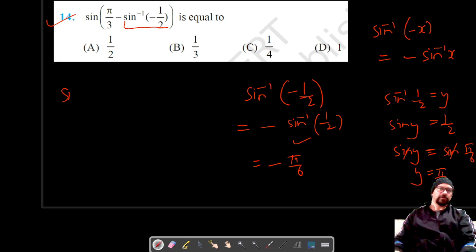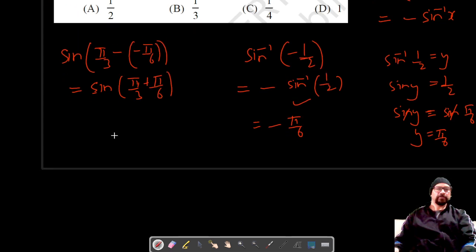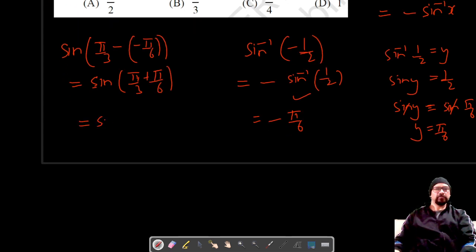So let's put in the value here. It's π by 3 minus sine inverse negative half, which is negative π by 6. This is now π by 3 plus π by 6, which is equal to π by 2.